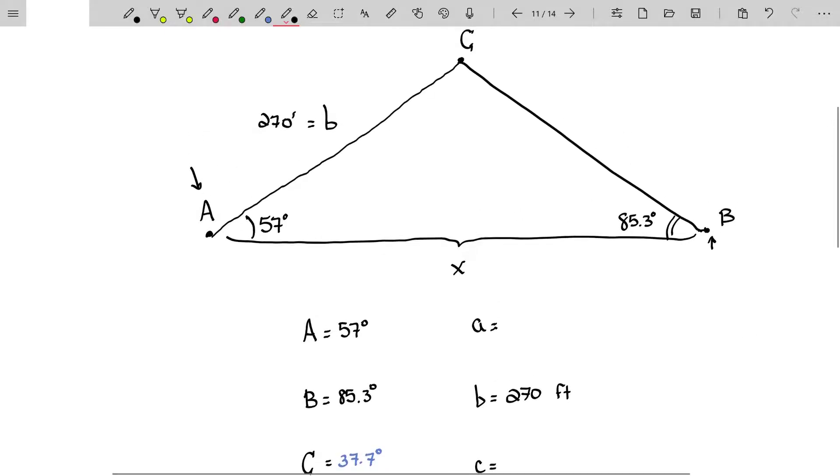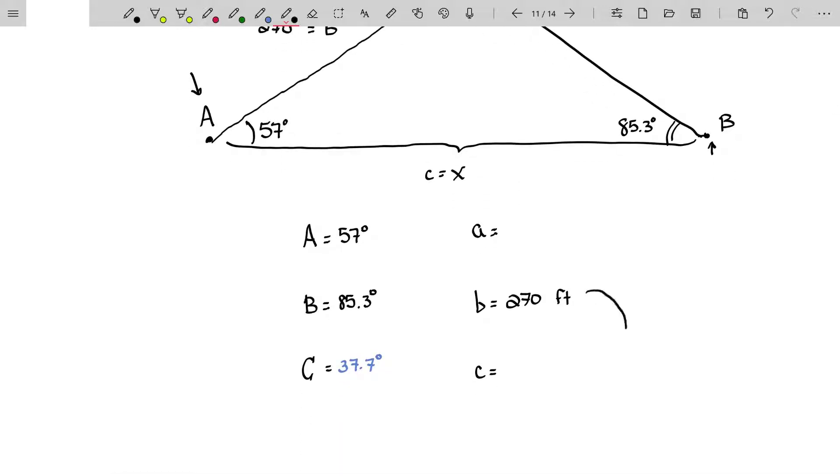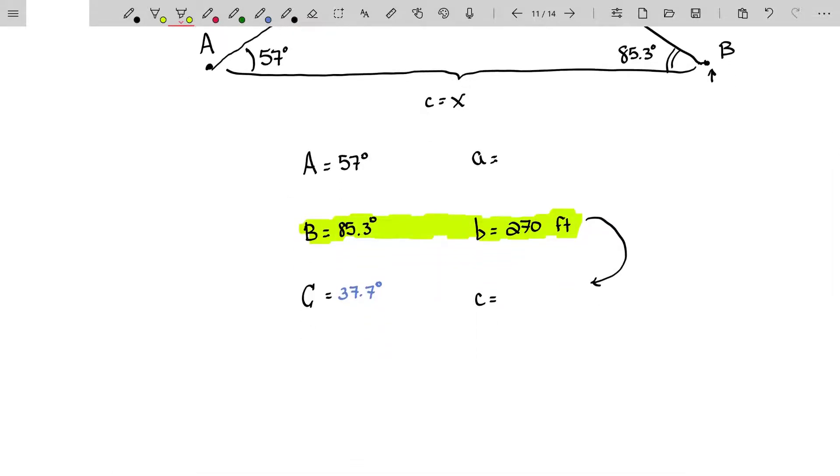We want the side opposite angle C, so side C, that's what we want. So I'm going to use this completed row with the law of sines to find that missing side. Because we're finding a missing side, not a missing angle, there will not be an ambiguity here. Remember law of sines, you only get that ambiguity if you're finding missing angles.